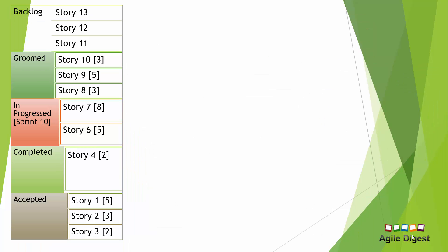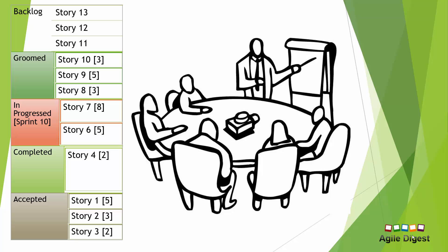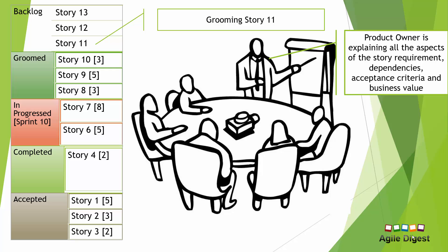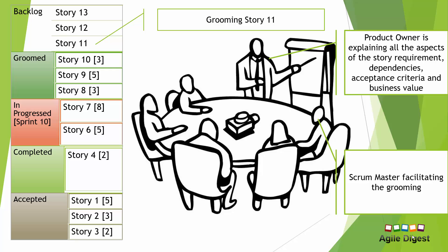Moving to the next stage — this is our assumed team structure with three different roles: product owner, Scrum Master, and development team. The product owner is demonstrating the stories, covering requirements, dependencies, risks, and acceptance criteria. The Scrum Master is sitting with the development team and testers, facilitating the grooming of story 11 today.